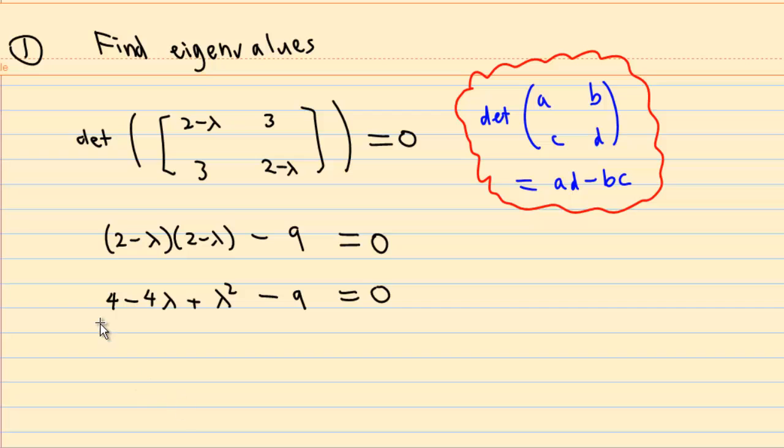Expand out, we get 4 minus 4 lambda plus lambda square minus 9 equal to 0. We group, we have lambda square minus 4 lambda minus 5 equal to 0.